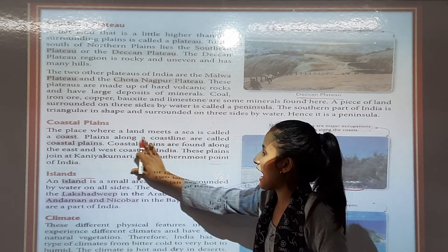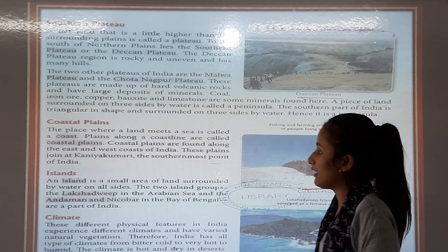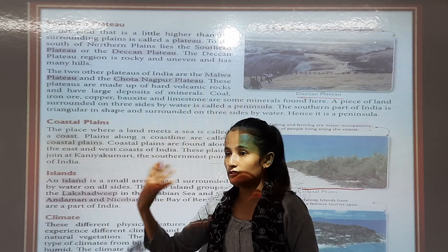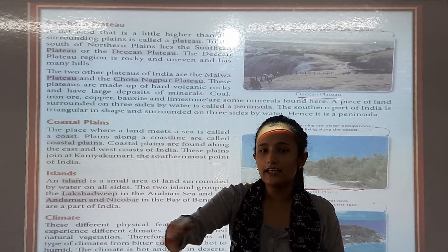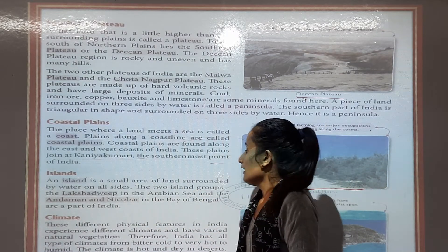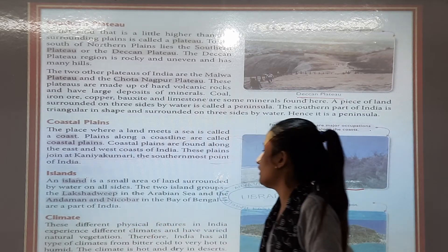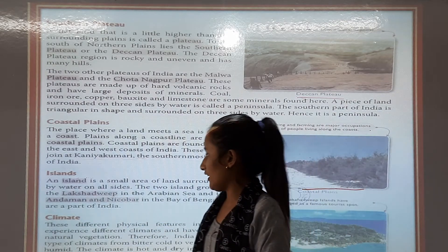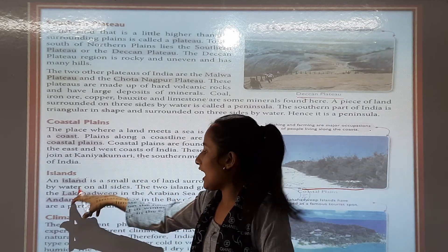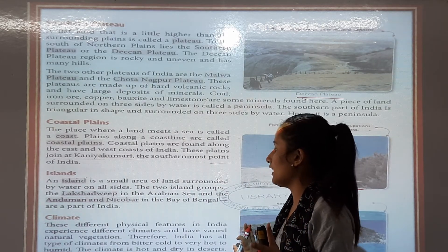Now we are going to learn about islands. An island is a small area of land surrounded by water on all sides. The two island groups of India are Lakshadweep in the Arabian Sea, and the Andaman and Nicobar Islands in the Bay of Bengal. Both are part of India.